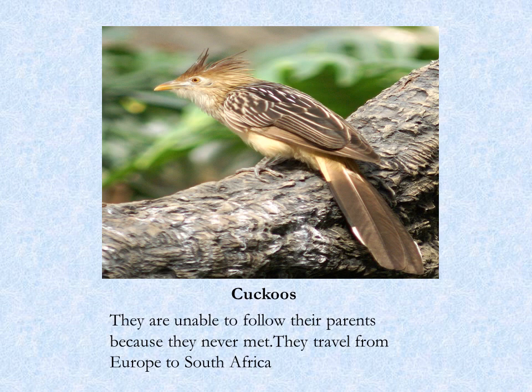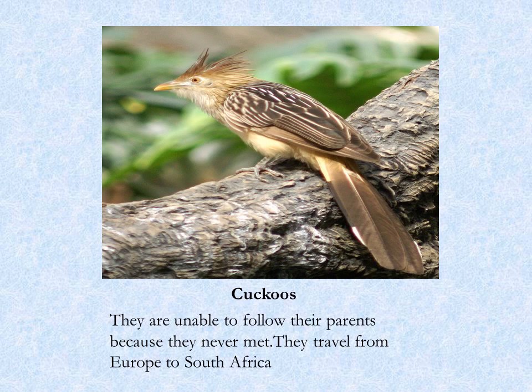The next bird is the cuckoo bird. You might have always heard the sweet sound of these birds. These cuckoos are unable to follow their parents because their parents lay eggs and leave them to be raised by a crow or another bird, so they never meet. They travel from Europe, which becomes very cold, and move to South Africa to settle there. Fill in the blank with the word: cuckoo.